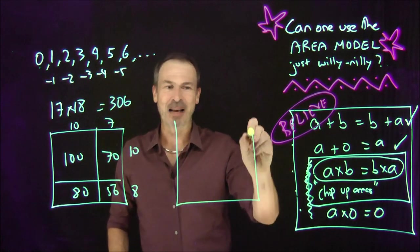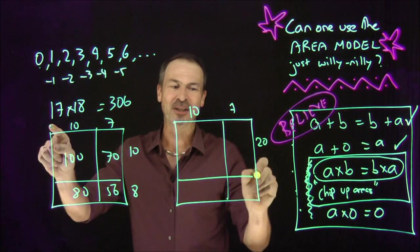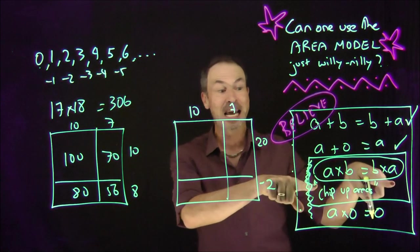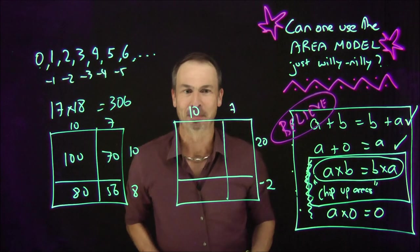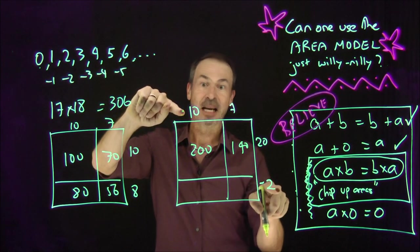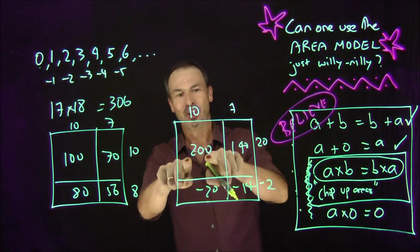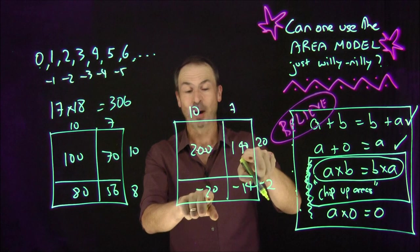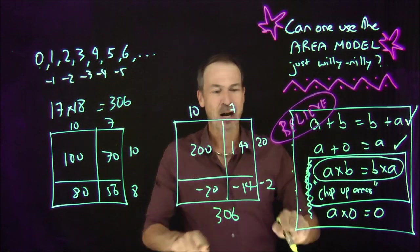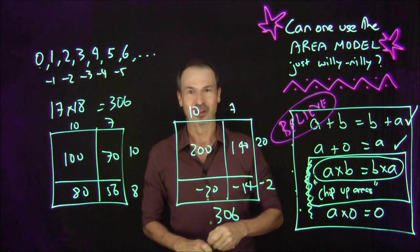Now I'll get strange with the 18: think of it as 20 and negative 2. Can't have a side length of negative 2 in geometry, but we're saying we believe this picture still speaks arithmetic truth. Let's check: 10 times 20 is 200, 7 times 20 is 140, 10 times negative 2 is negative 20, 7 groups of negative 2 is negative 14. So 200 plus 140 is 340, minus 20 is 320, minus 14 is 306. It's speaking arithmetic truth even with a negative side length.